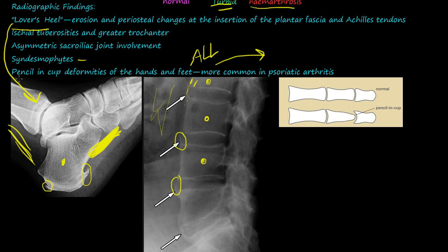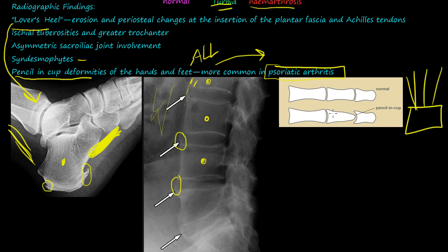The last radiographic finding is pencil-in-a-cup deformity, seen in the hands and feet but more common in psoriatic arthritis — though it can also appear in Reiter's syndrome. The proximal bone comes to more of a point, and the distal joint makes a cup shape, resembling a pencil sitting in a cup. You can Google images of this deformity to see examples.